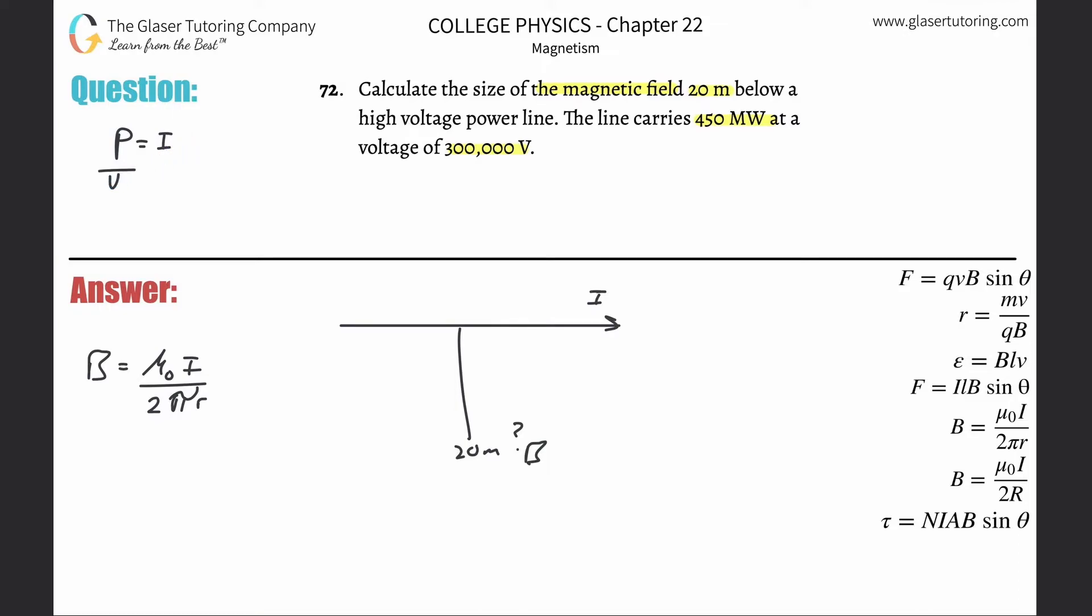Look at how beautiful that is. So this is going to be 450 times 10 to the sixth (because that's the value in watts) divided by the voltage, which is 300,000. That's equal to—get your value—450 times 10 to the sixth divided by 300,000. It works out to be about 1500 amps.